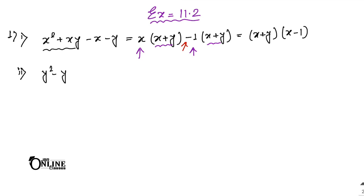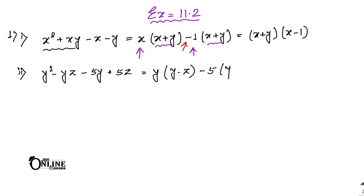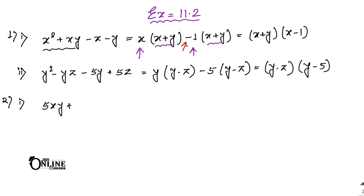Number 2: y² - yz - 5y + 5z. From the first two terms, common out y, giving y(y - z). From the next two, common out minus 5, giving minus 5(y - z). So y - z is the common factor. The answer is (y - z)(y - 5).